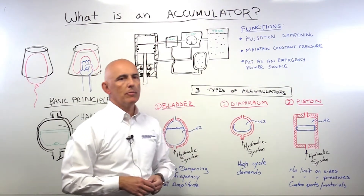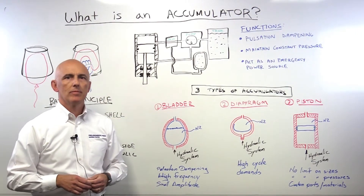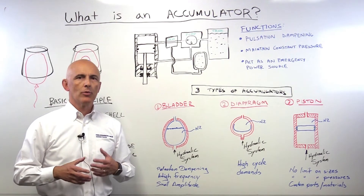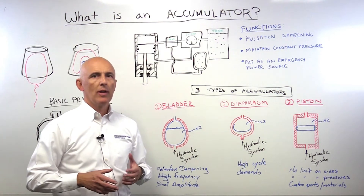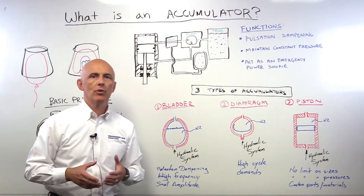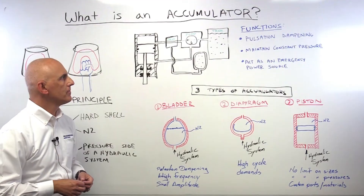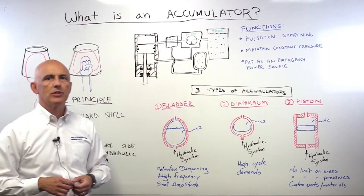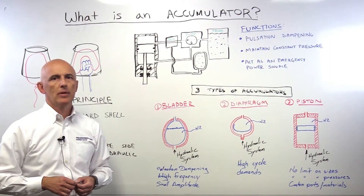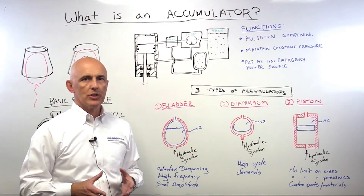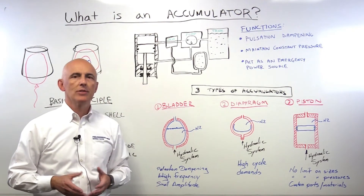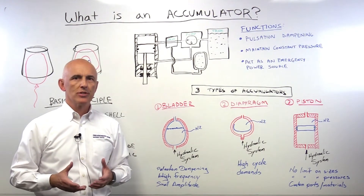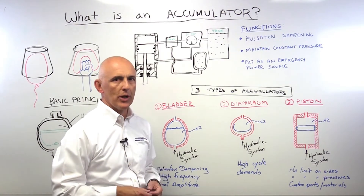Also, the accumulator can keep constant pressure in your system. If you have a leakage, for example, you're going to lose the pressure of the system. The accumulator will stabilize the pressure and keep it at a certain level until you can stop your system for maintenance. Another function for the accumulator is to be an emergency source of power in your system. For example, when your system is applied on hydraulic brakes and you need a sudden release of pressure, the accumulator will help you releasing this pressure whenever it is needed.